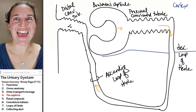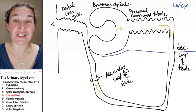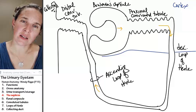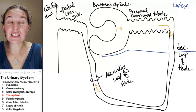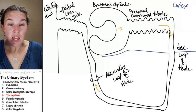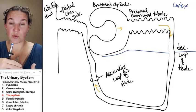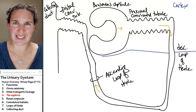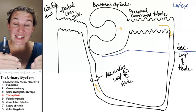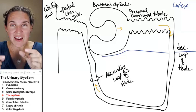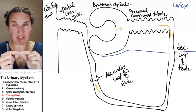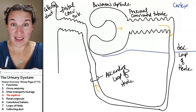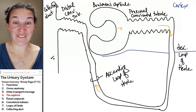That's cool. And then distal convoluted tubules dump into collecting ducts. Collecting duct. Collecting ducts all, like there are distal convoluted tubules from a million nephrons that dump into collecting ducts. And the collecting ducts converge and converge and converge and eventually form little holes, little pores in the renal papilla.